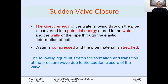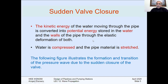At the other end of the pipe, a valve regulates the flow of water, and the pipe flow velocity is considered as V. Upon sudden valve closure, the kinetic energy of the water — initiated by the flow velocity moving through the pipe — is converted to potential energy stored in the water and the wall of the pipeline, through two things: elasticity of water and elasticity of the pipe.